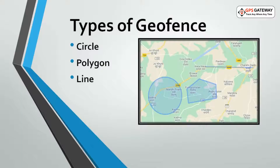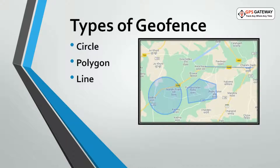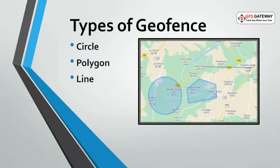You can draw three types of geofence on the map: circle geofence, polygon geofence, and line geofence. Let's start with understanding how you can draw a geofence.